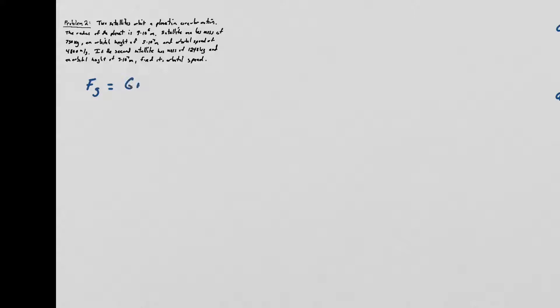For Problem 2, we have two different satellites at two different orbital heights and two different masses, both in circular orbits around a central planet. All circular motion equations apply. We write F_gravity = G·M_planet·m_satellite/r² = m_satellite·v²/r. The satellite mass cancels on both sides, meaning the satellite mass is completely irrelevant to this problem.